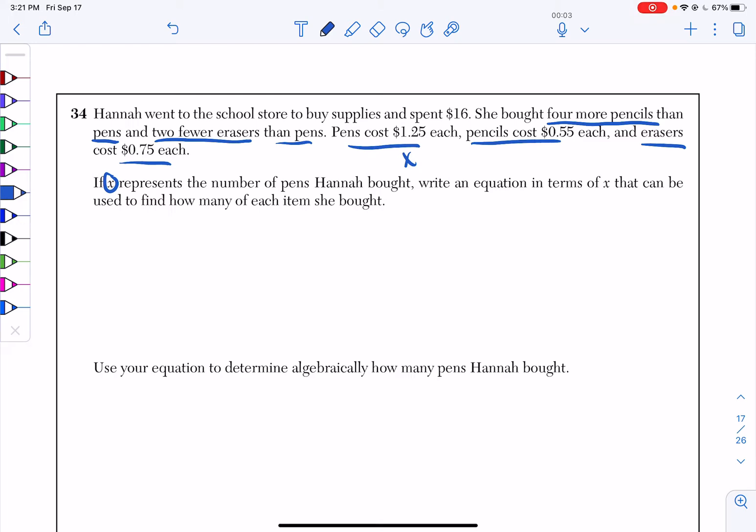Well, we know that pens cost $1.25 each, so we have 1.25X. We know she bought four more pencils than pens. So I can say pencils is X plus 4, but we know that pencils cost $0.55 each. So I'm going to have plus 0.55 times X plus 4.